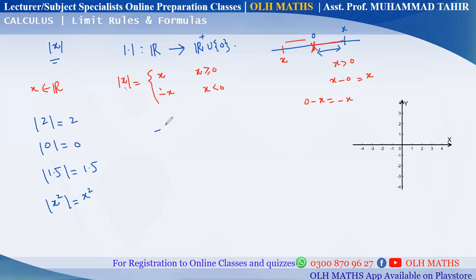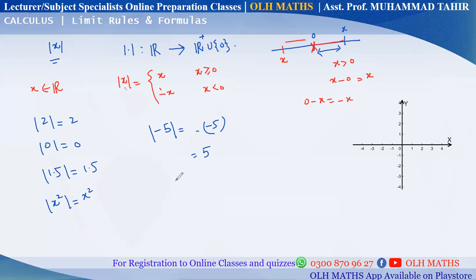Absolute value of minus 5: since minus 5 is negative, by default when we remove the mod we write a minus sign with the number. Minus times minus makes it positive, so the absolute value of minus 5 is 5.